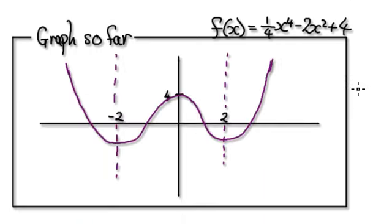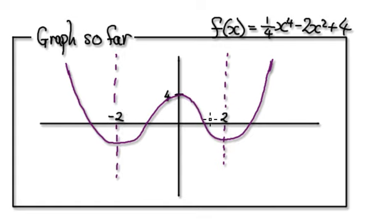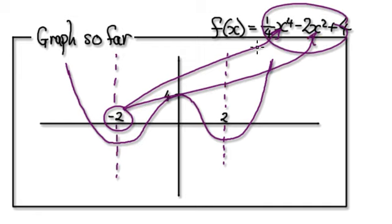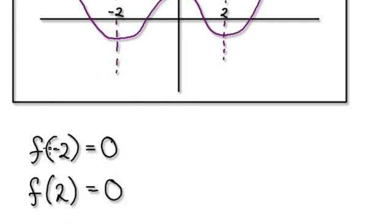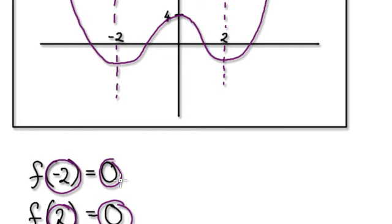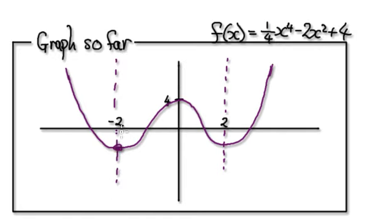So the gradient will be 0 at x equals 0, 2, and negative 2. We know the gradient will be 0 at negative 2, at 0, and at positive 2. But we don't know the value there, so we put negative 2 into the function. That gives us 0, and f of 2 also gives you 0, meaning this point here should be at 0. So the coordinates here will be minus 2, comma 0, and this point here will be 2, comma 0.